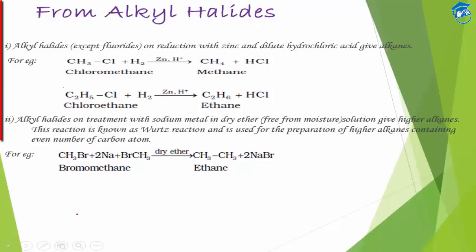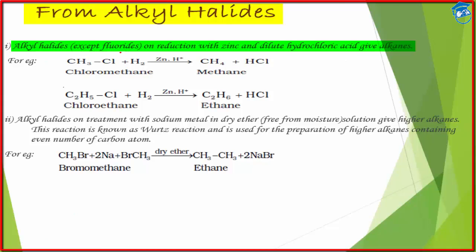The second method is from alkyl halides. Alkyl halides — except fluoride, so we use chlorine, bromine, or iodine — on reduction with zinc and dilute HCl (hydrochloric acid) will give the appropriate alkane.